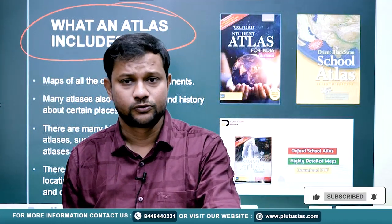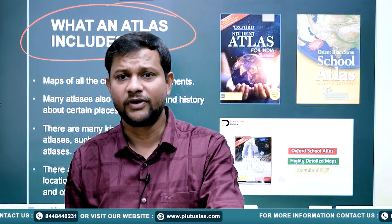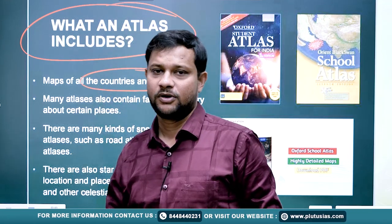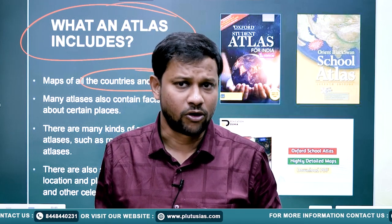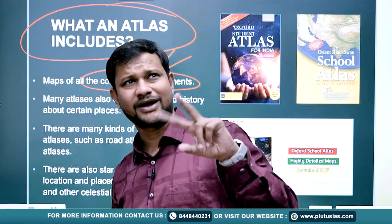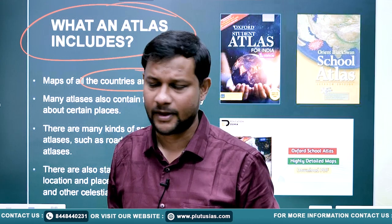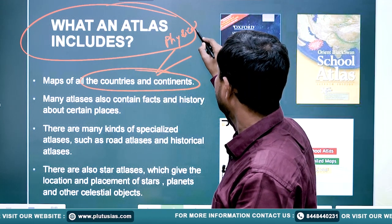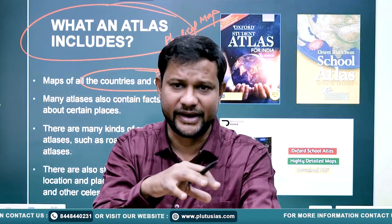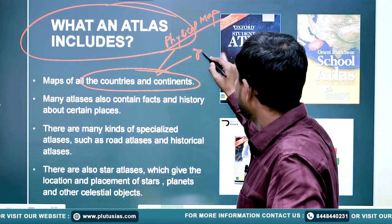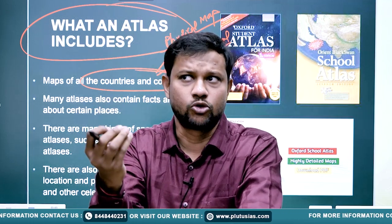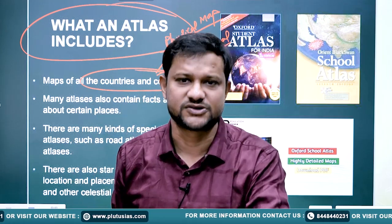This atlas includes various dimensions. First, as we all know, it has in-depth information about continents and oceans and various spatial locations. Usually, there are two kinds of maps given for each continent: a physical map, wherein all physical locations in terms of elevation, rainfall, or climatic conditions are mentioned; and a political map, which shows the location of districts, cities, capitals, highways, and other features.